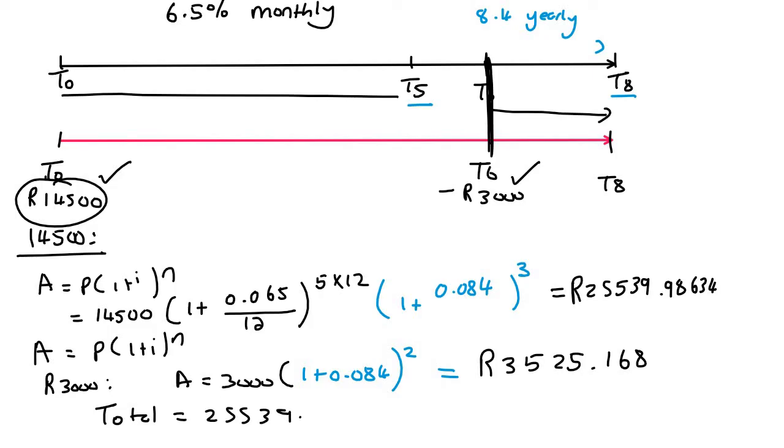So to find out the total, you're just going to say 25,539.98634 minus 3,525.168.